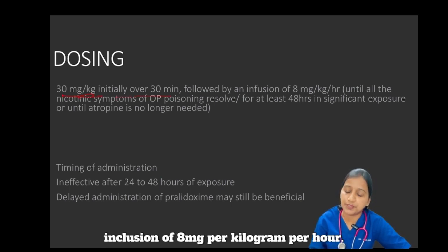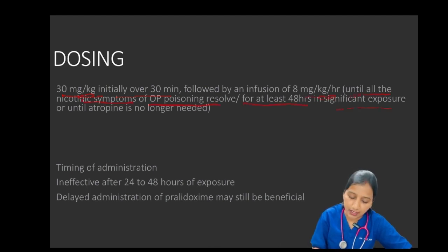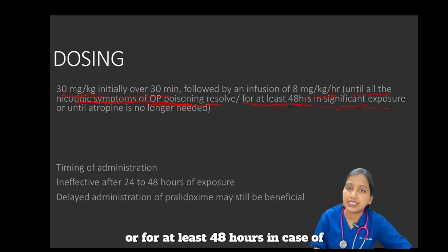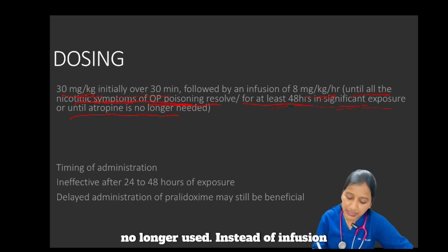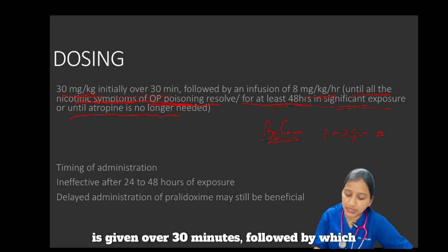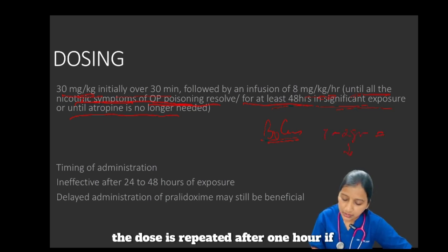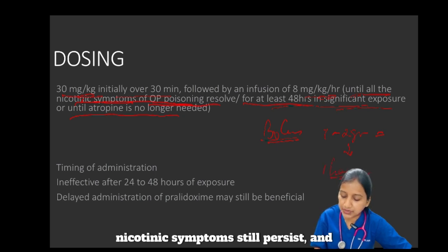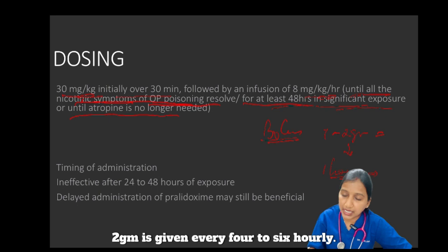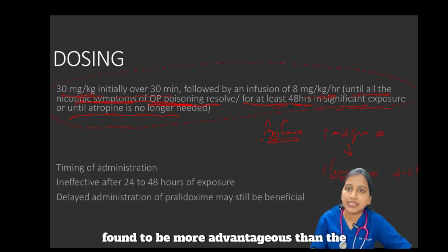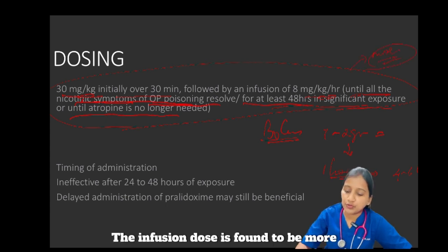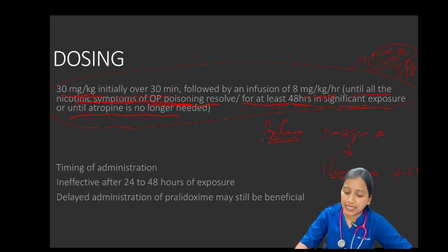Coming to dosing: the dose is 30 mg/kg initially over 30 minutes, followed by an infusion of 8 mg/kg/hour. This is given until all the nicotinic symptoms of OP poisoning resolve, or for at least 48 hours in cases of significant exposure, or until atropine is no longer used. Instead of infusion, bolus doses are also used — an initial bolus of 1 to 2 grams over 30 minutes, repeated after one hour if nicotinic symptoms persist, then 2 grams given every 4 to 6 hours.